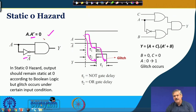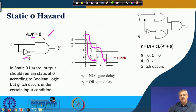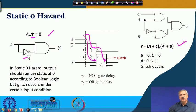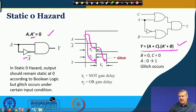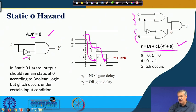Let us look at one practical example. If you realize the truth table we had seen before for the Static-1 Hazard problem using a Product of Sums (POS), we get a relationship where A-or-C is generated here, A-prime-B is generated over here, and these two are ANDed through this AND gate.